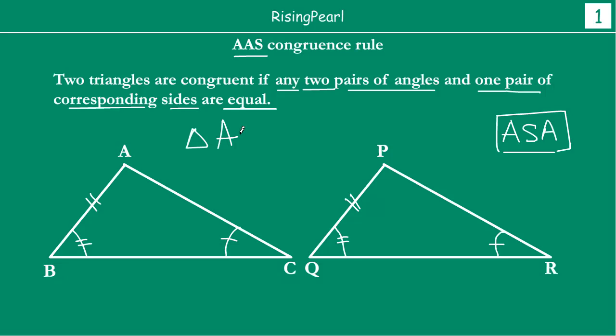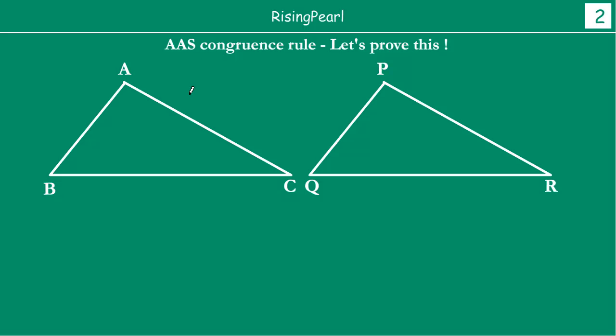So we have to prove it. Let us now get into the proof of how we can prove it. So like we discussed, let us say angle B equals angle Q and angle C equals angle R, and then we understand AB is equal to PQ. So if we give this one, then you notice one thing.